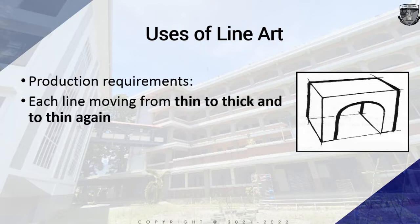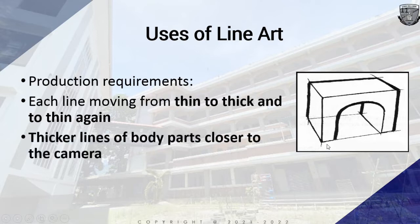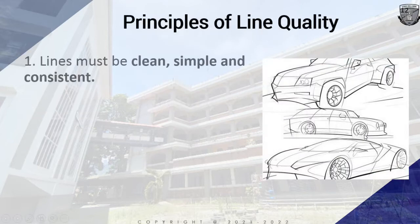We also have each line moving from thin to thick and to thin again, replacing the line produced by brush and ink. Thicker lines indicate body parts closer to the camera. So if you want to create objects that are closer to the camera, you need to place thicker lines on that particular object.